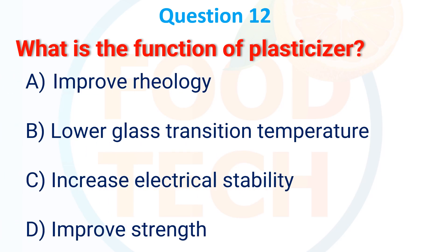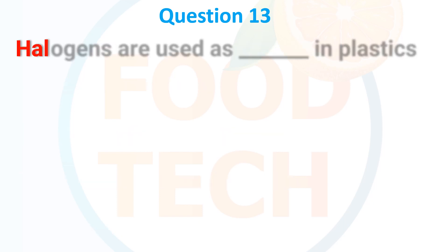A) Improved rheology, B) Lower glass transition temperature, C) Increase electrical stability, D) Improved strain. The answer is B) Lower the glass transition temperature. Halogens are used as what in plastic?